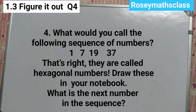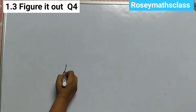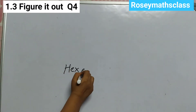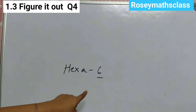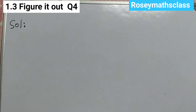And then it's written that they are called hexagonal numbers. Draw these in your notebook. What is the next number in the sequence? In this question, you need to copy the pictorial representation in your notebook and then give the next number in the sequence. What are hexagonal numbers? Hexa means 6, and we will see how we are going to use 6 to draw this pattern. Let us start with the solution.